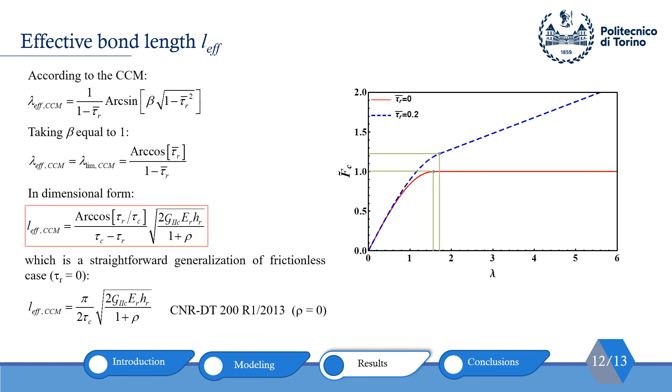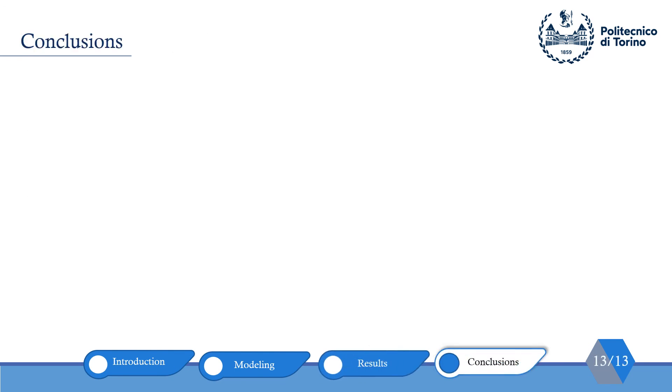In this picture, we have examined the effect of the friction on effective bond lengths based on the cohesive crack model. As you can see, by increasing the residual strength, the effective bond lengths increases. On the other hand, for the cohesive crack model, if we consider beta equal to 1 and then rewrite the effective bond lengths equation in dimensional form, for the case of frictionless or tau_r equal to 0, we can achieve the proposed equation of Italian standard CNR-DT 200 R1/2013 for effective bond lengths.